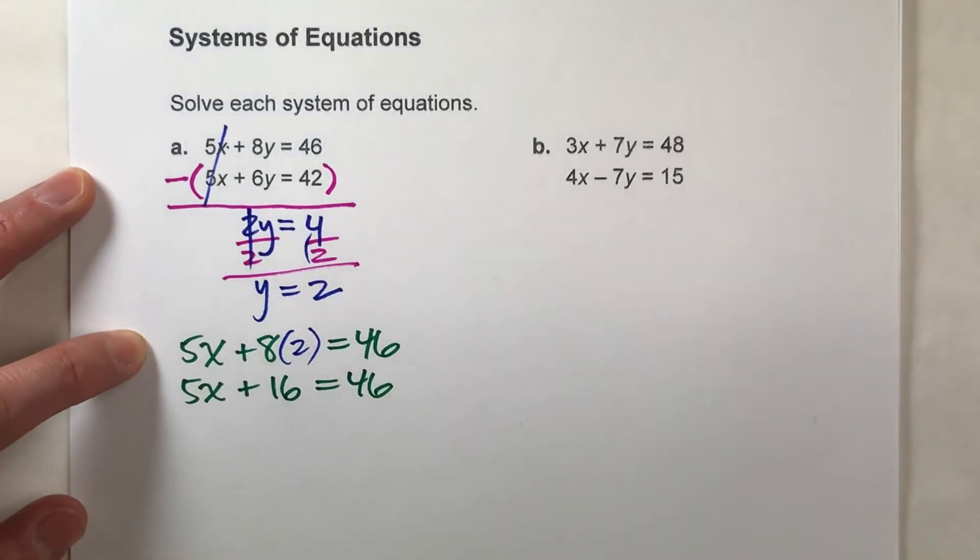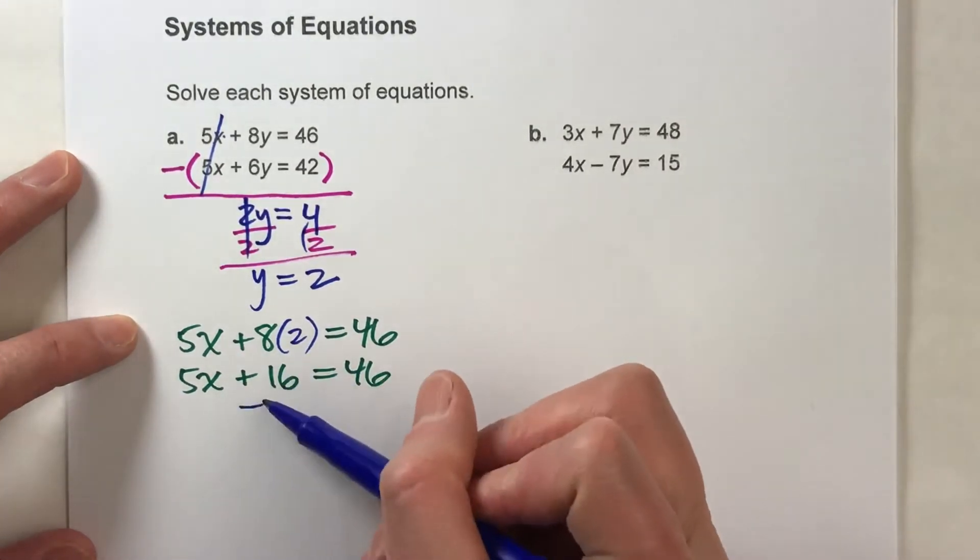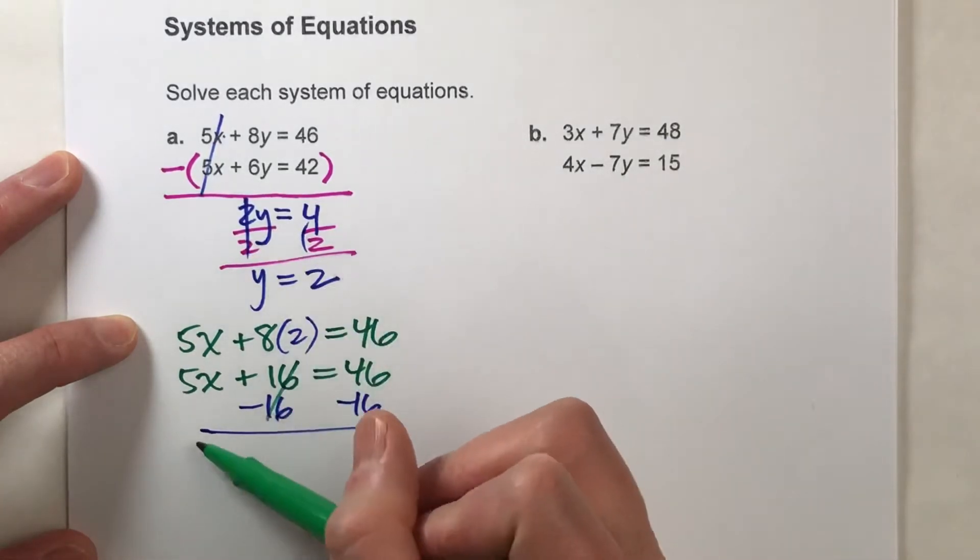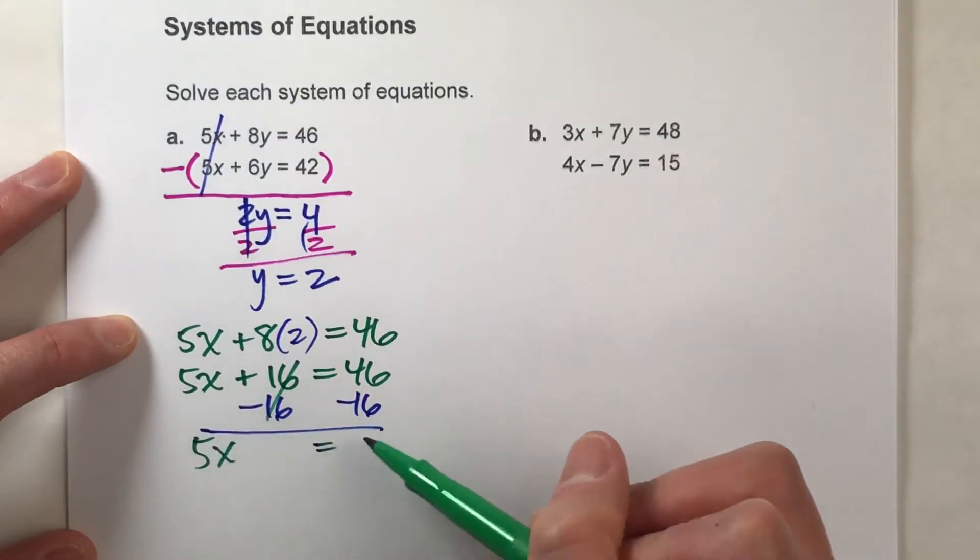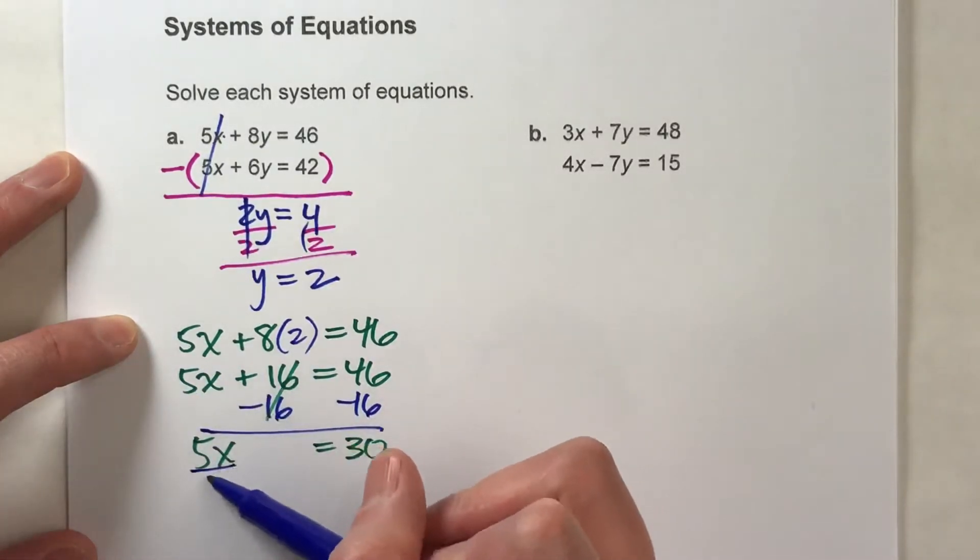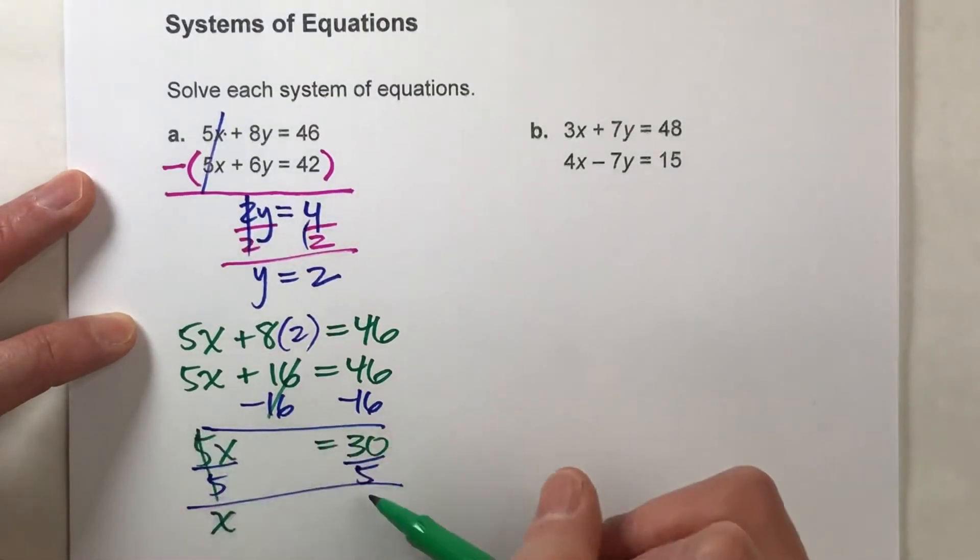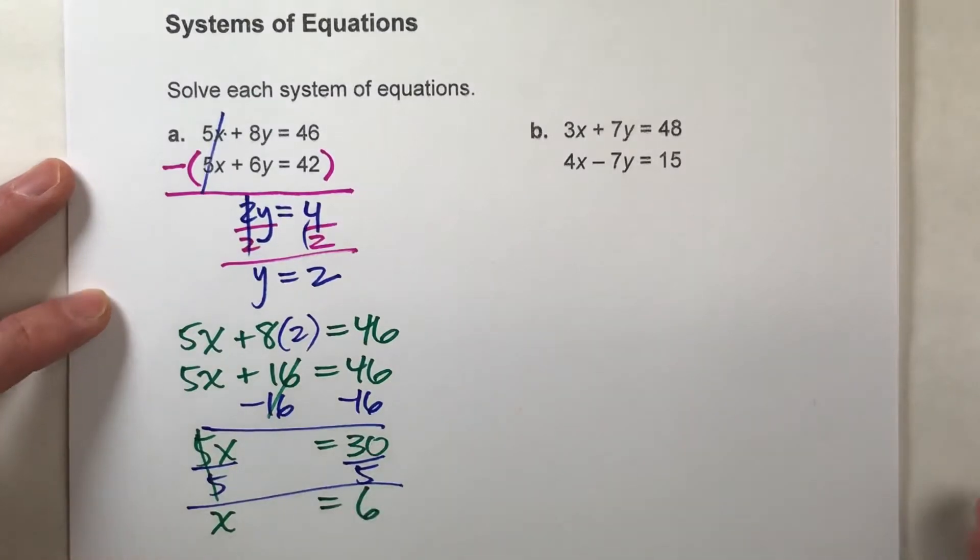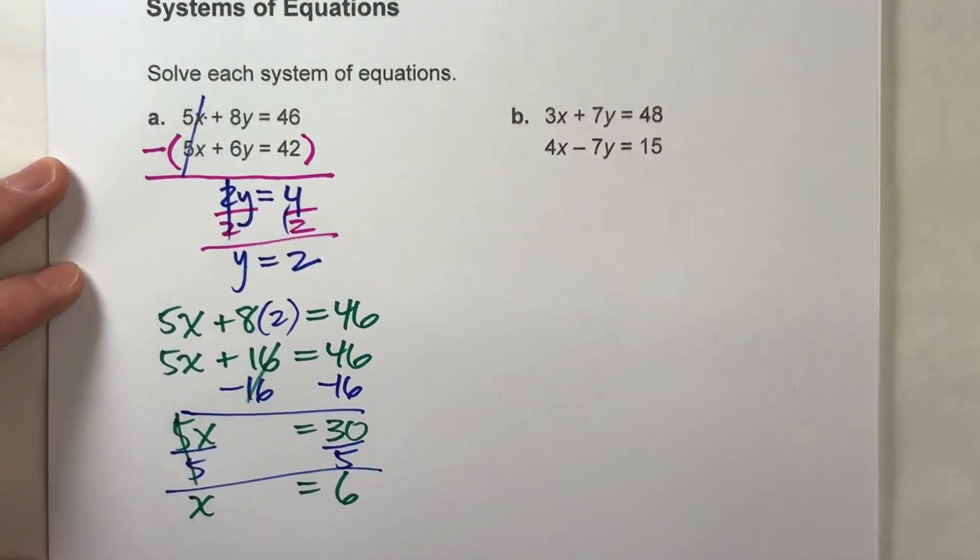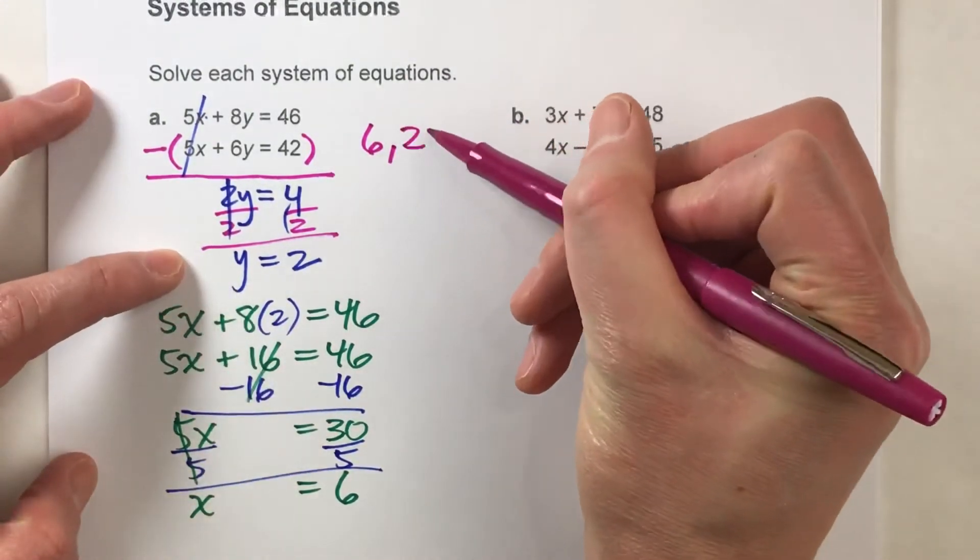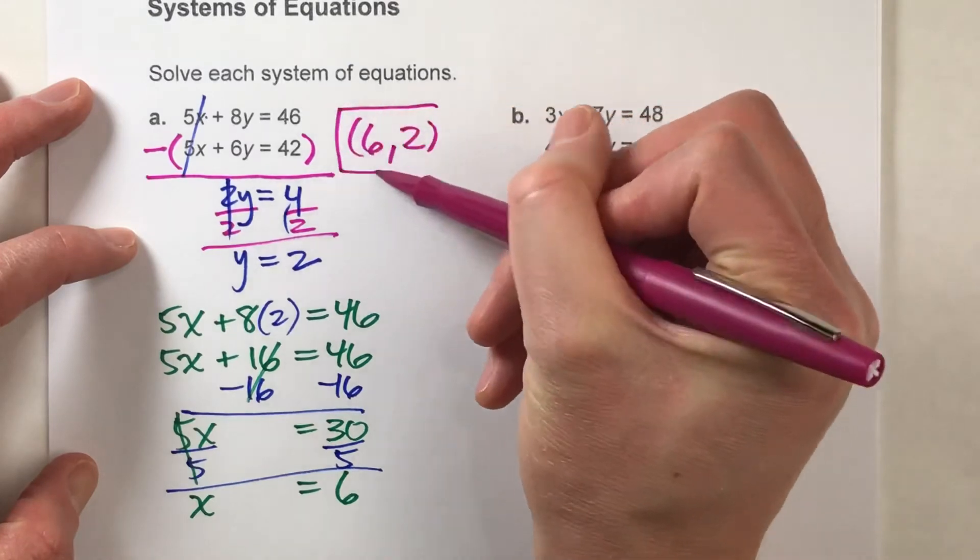So let's simplify this. This will become 5x plus 16 equals 46. And now I've got a second algebra equation I need to solve to figure out what x is. So if I do that, subtract 16 on both sides, and these undo each other. I'm left with 5x equals 30. And then my last step, I'm going to divide both sides by 5. And I'm going to end up getting x equals 6. So there we go. I have my solution now. I know that x is going to be 6. Y is going to be 2. And that's the solution to my system of equations.